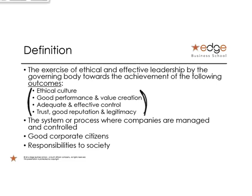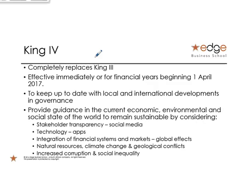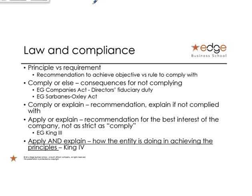The outcomes of King — and you'll see these words pop up all over the place — are ethical foundation, effective leadership, honesty, integrity. These are the types of common phrases King likes to use. So that was the background: King 1, King 2, and then between King 2 and King 3 came the big change. King 4 completely replaces, whereas previously they just had add-ons.